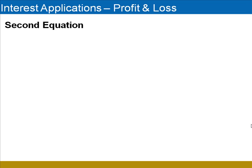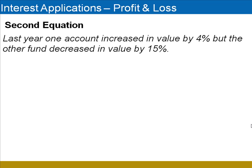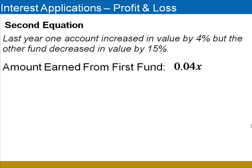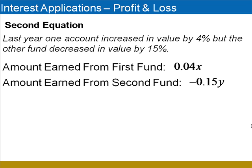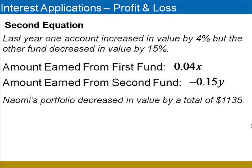Now we look for our second equation. We know that one fund increased in value by 4%, and the other decreased in value by 15%. That means the amount earned from the first mutual fund is 0.04X — the percent multiplied by the amount invested. Since the second account decreased in value, we're going to multiply negative 0.15 by Y.